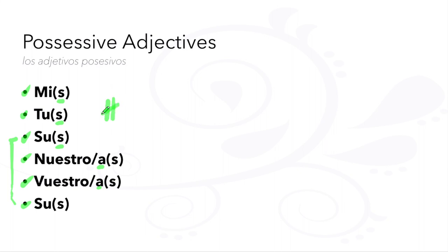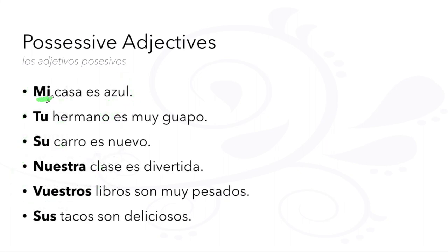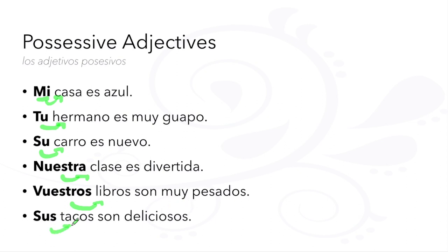Note the number of the objects that you're possessing. Mi casa es azul. Tu hermano es muy guapo. Su carro es nuevo. Nuestra clase es divertida. Vuestros libros son muy pesados. Sus tacos son deliciosos.